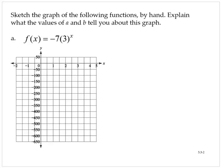Sketch the graph of the following functions by hand. Explain what the values of a and b tell you about this graph. Here we're given f of x equals negative 7 times 3 to the x.